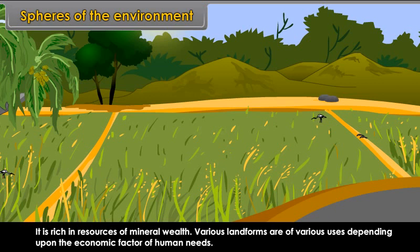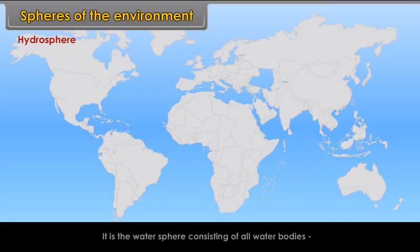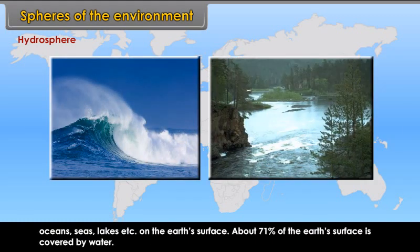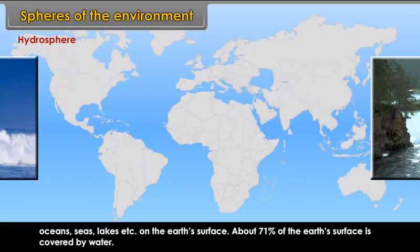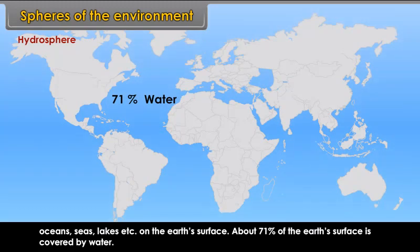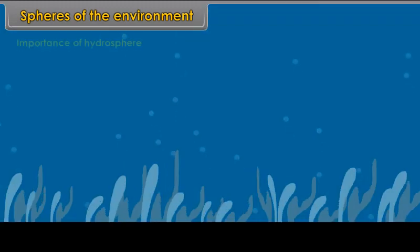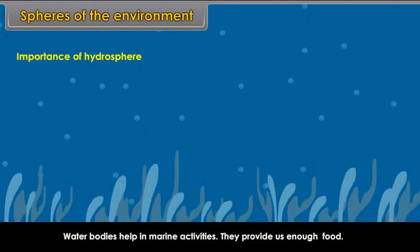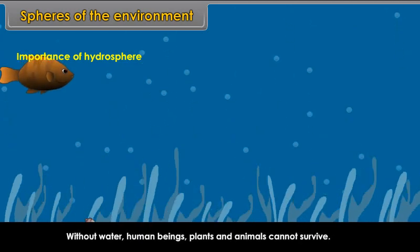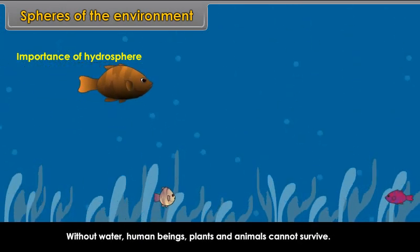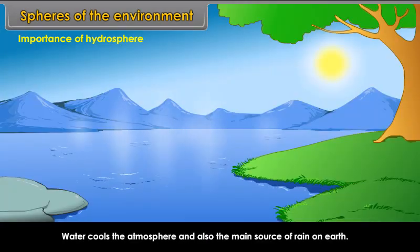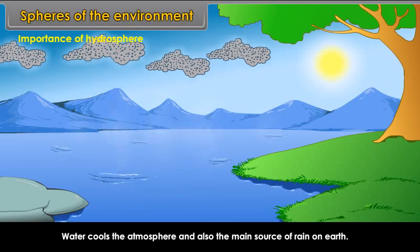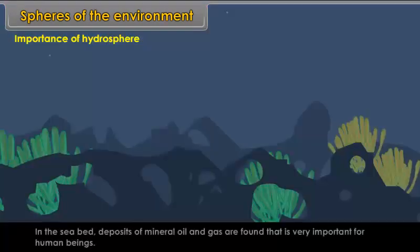Hydrosphere. It is the water sphere consisting of all water bodies — oceans, seas, lakes, etc. — on the earth's surface. About 71% of the earth's surface is covered by water. Importance of hydrosphere: Water bodies help in marine activities. They provide us enough food. Without water, human beings, plants and animals cannot survive. Water cools the atmosphere and is also the main source of rain on earth. In the seabed, deposits of mineral oil and gas are found, which are very important for human beings.